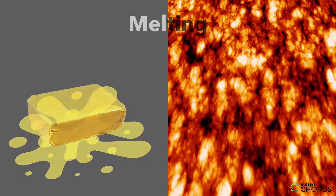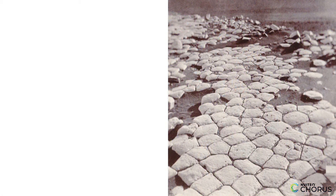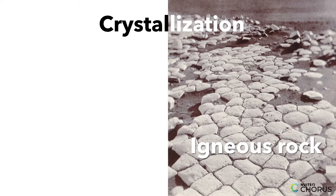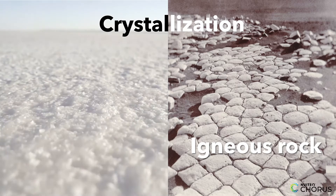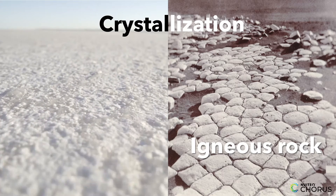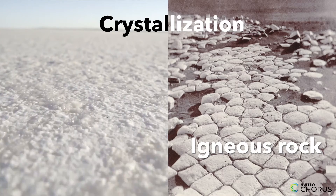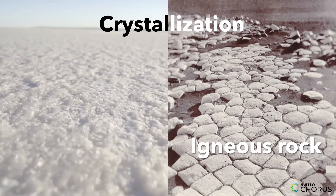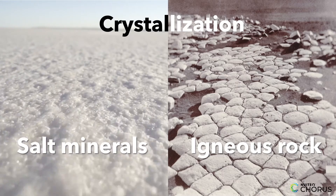Another process that happens in the earth kitchen is crystallization. When magma cools down, it turns into solid rock, just like how cooled cookie dough turns into a solid cookie. The rock that forms from magma is called igneous rock. Another example of crystallization is when salt water evaporates — the salt that was dissolved in the water is left behind, and this is one way that salt minerals can form.